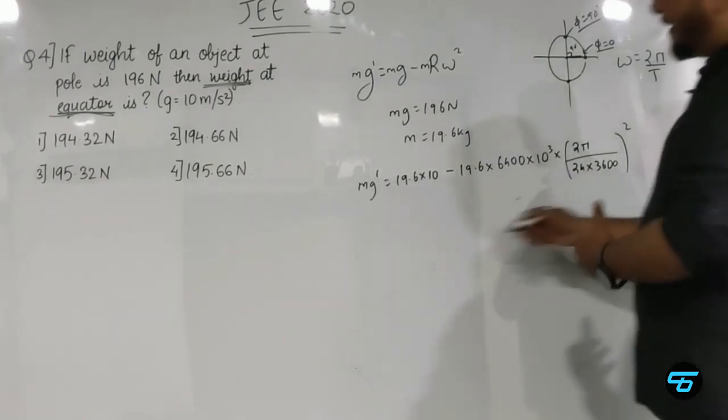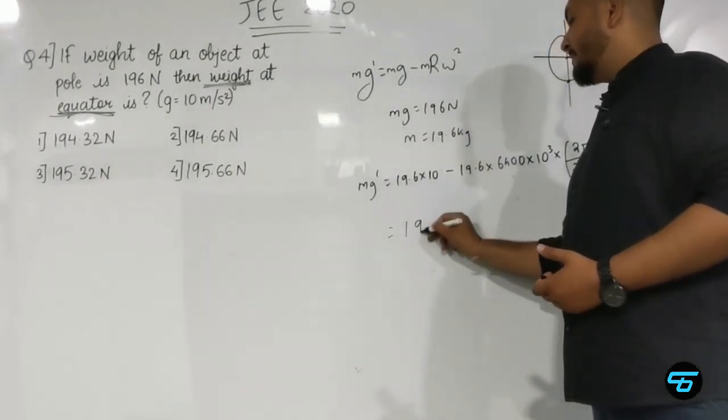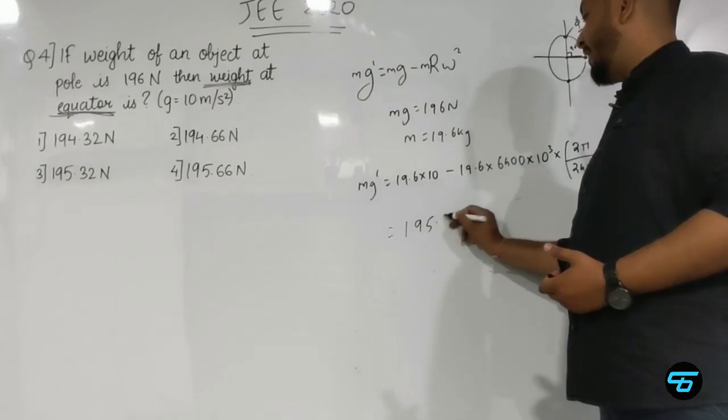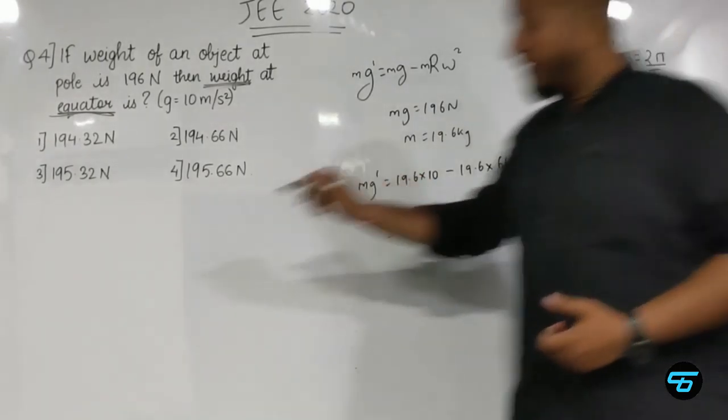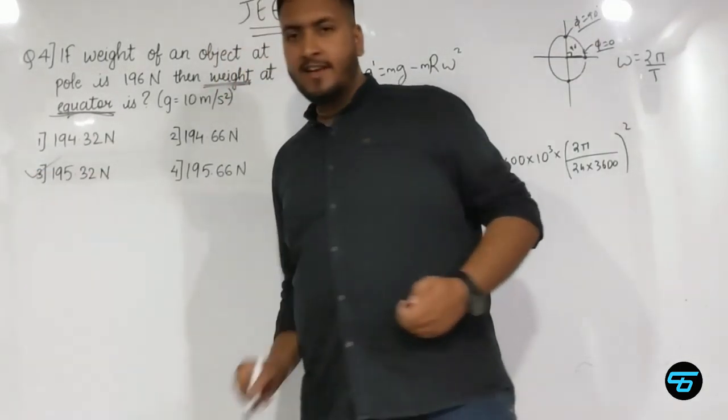When we simplify this, we'll get something close to 195.32, which is our third option. I hope it is clear.